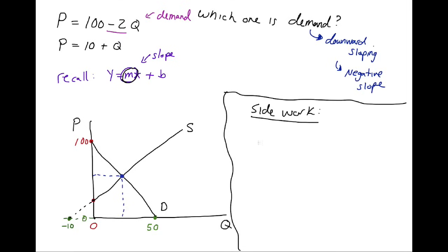So the idea of the equilibrium is where these two lines cross. And so we're just going to set the equations equal to each other. And so we have 100 minus 2Q, which is our demand equation, equal to 10 plus Q, which is our supply equation.